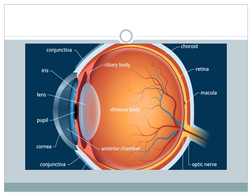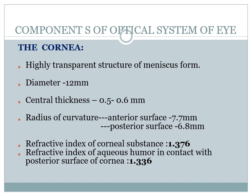This is the diagram of the eye showing the various structures. The cornea is a highly transparent structure of meniscus form. Its diameter is about 12 mm and central thickness is 0.5 to 0.67 mm. The radius of curvature differs between surfaces: the anterior surface is 7.7 mm and the posterior is 6.8 mm. The refractive index of the corneal substance is 1.376, and the refractive index of the aqueous humor in contact with the posterior surface of the cornea is 1.336.